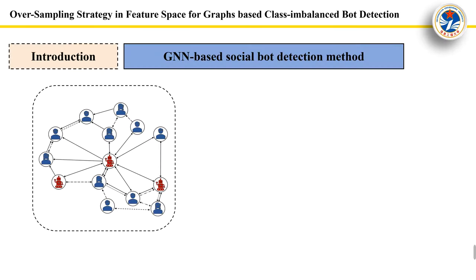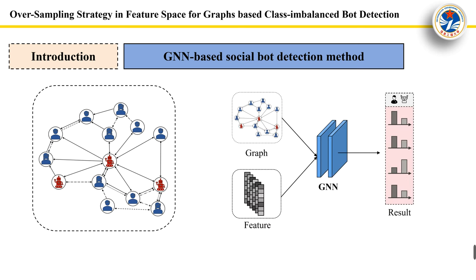In social media, a large number of social bots have brought negative impacts. Currently, graph neural network-based detection of social media bot accounts is the most advanced detection method. Specifically, treating accounts as nodes in a graph and interactions as edges, modeling bot account detection as a graph node classification problem.